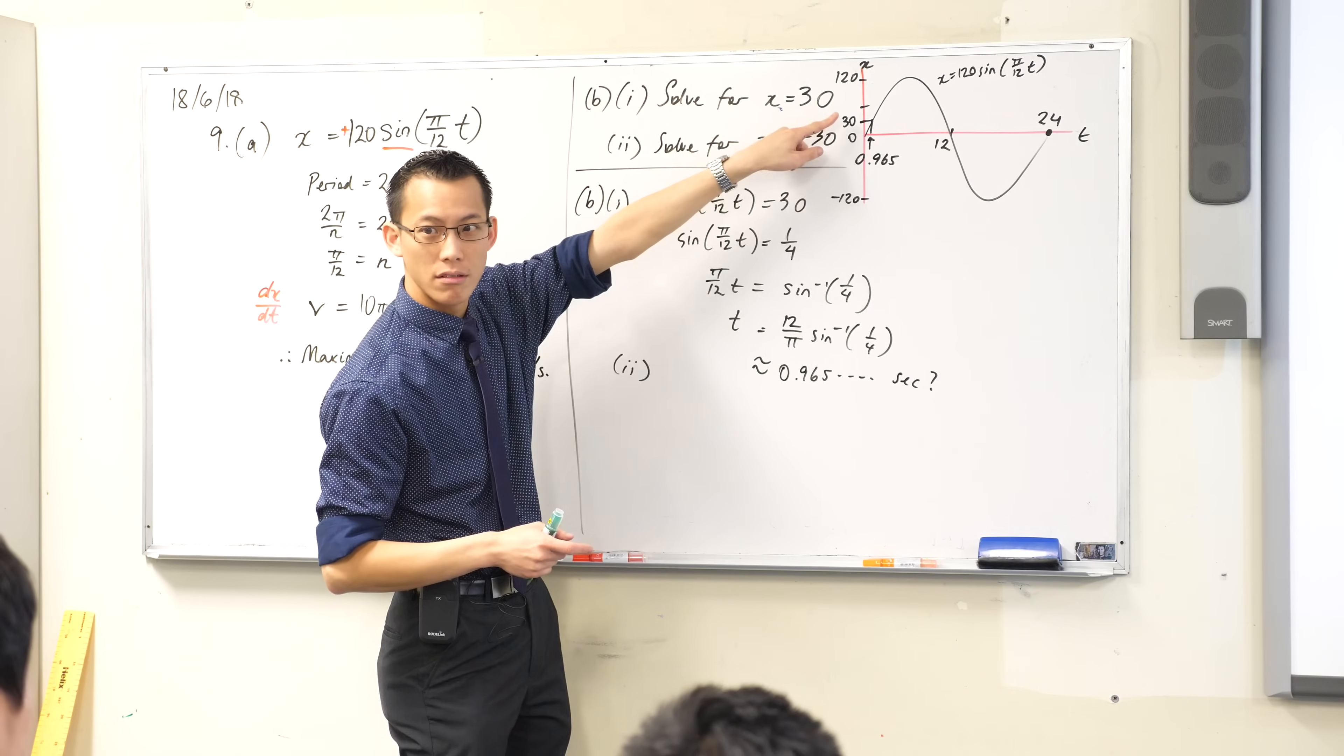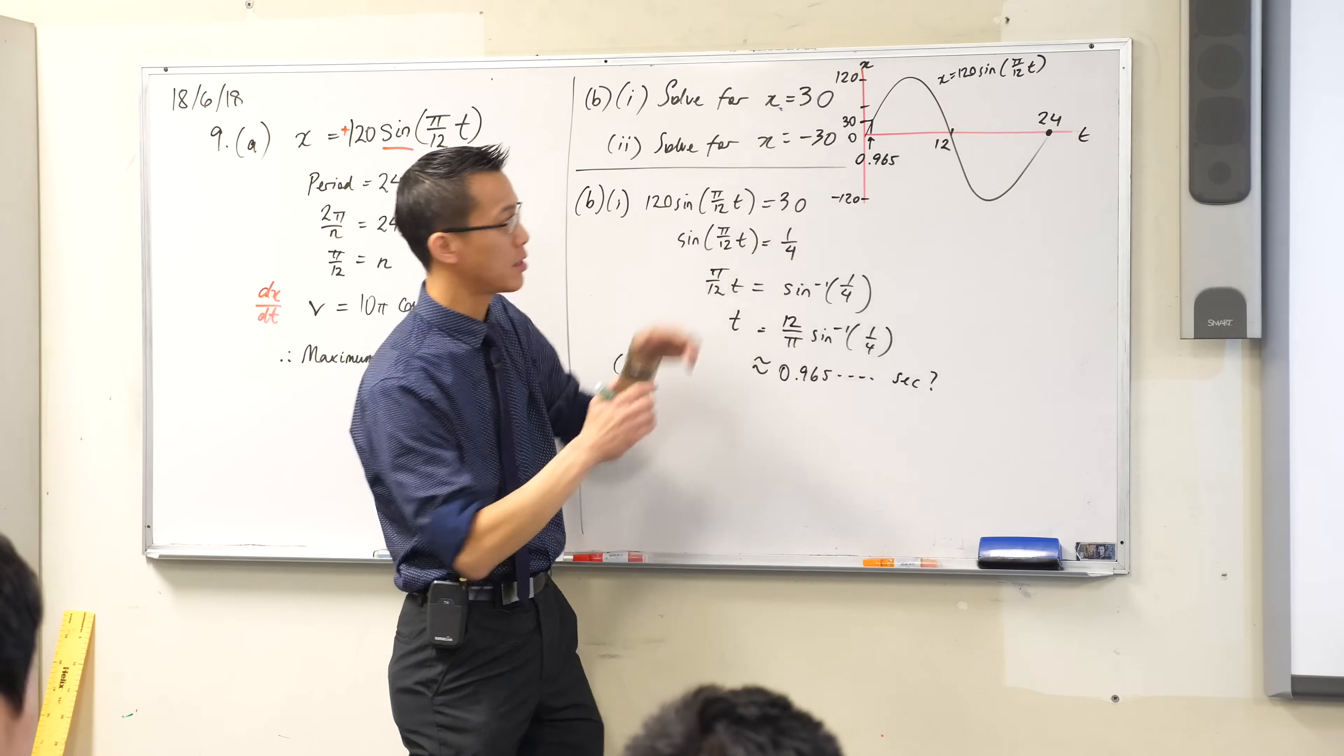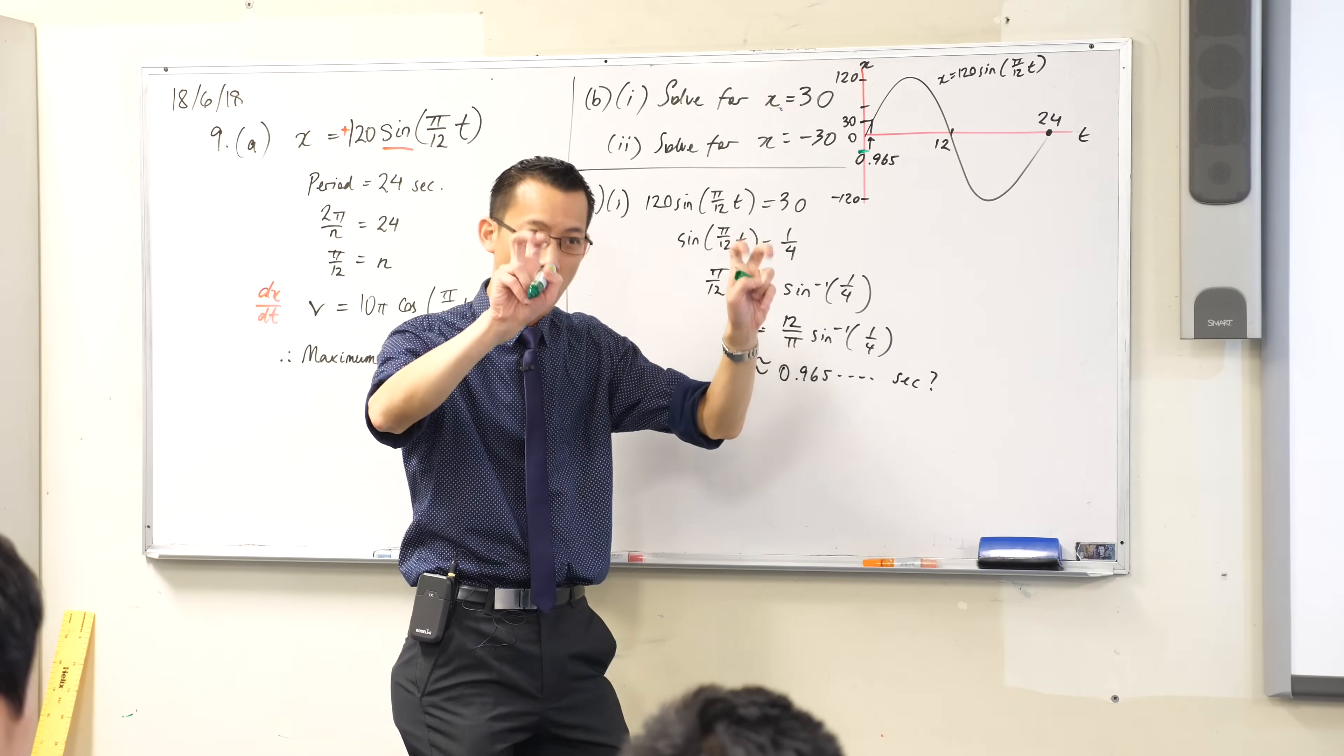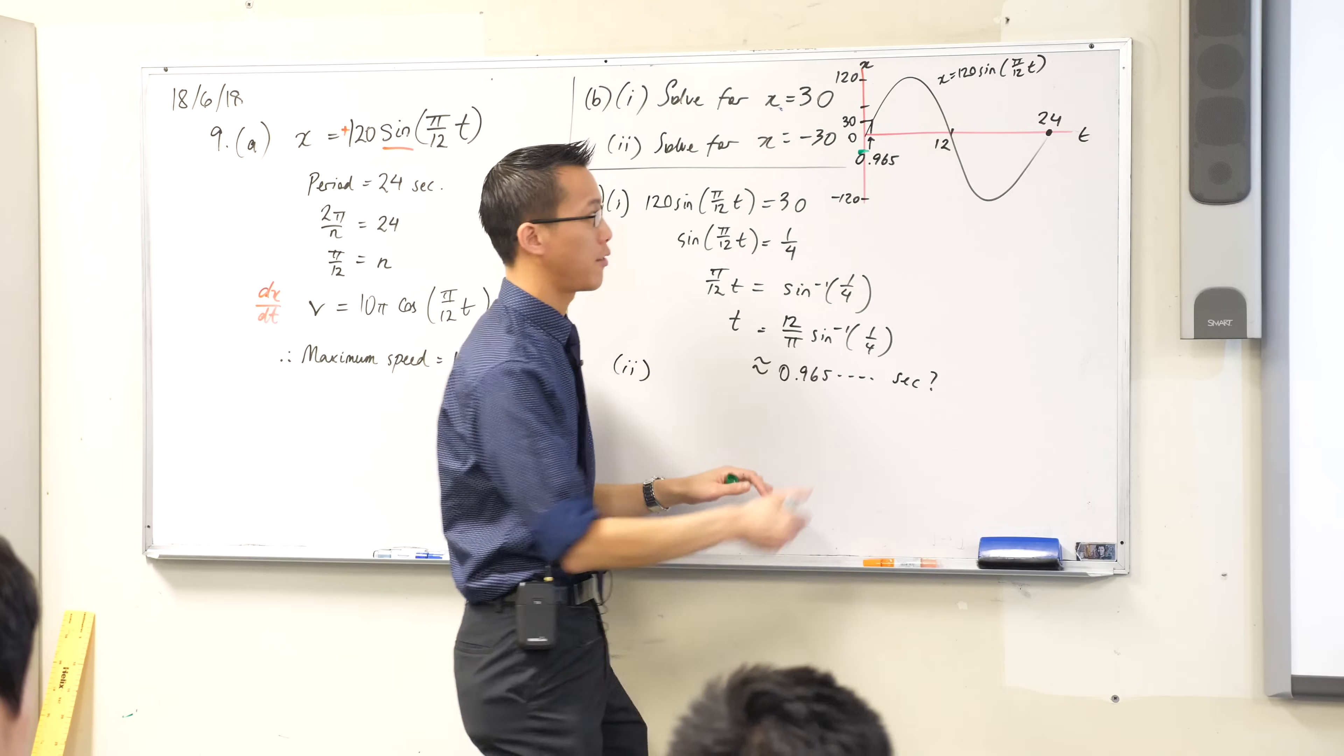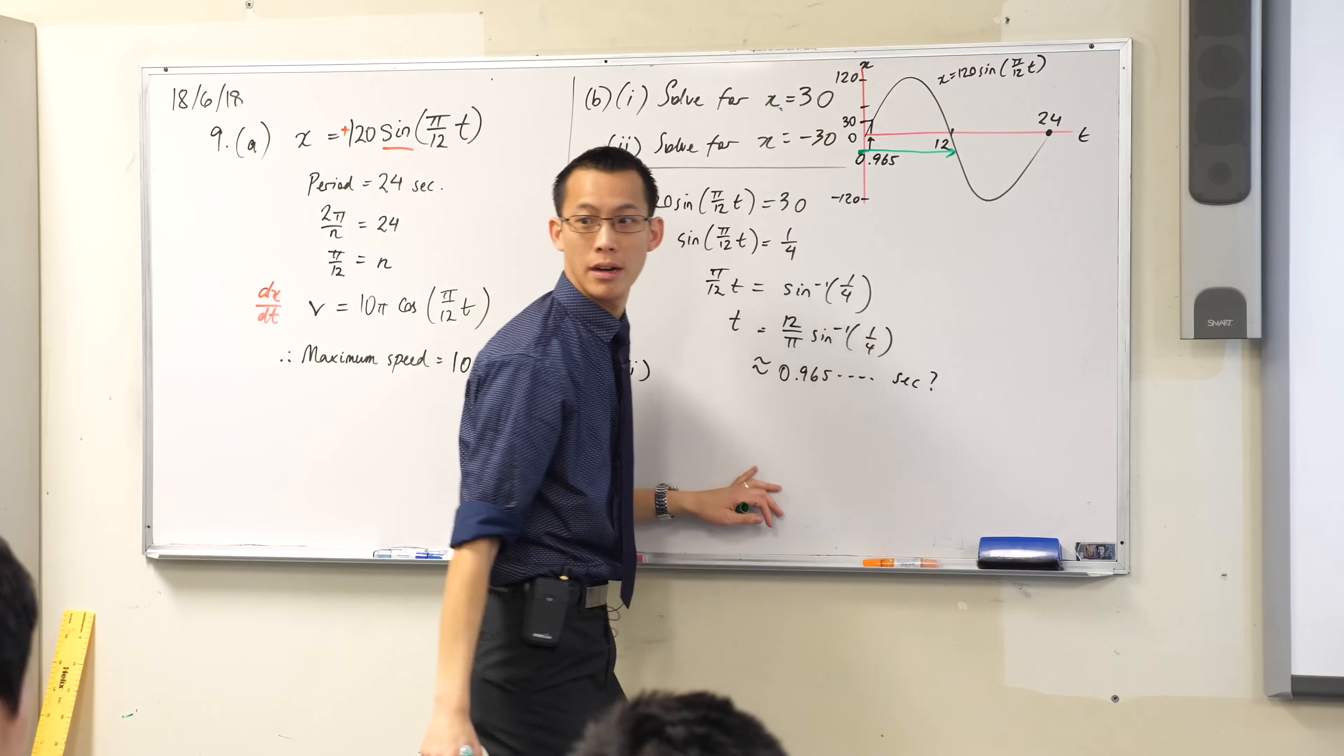Where's negative 30? It's gonna be just down below, on the opposite side. So if this is where negative 30 is, roughly, then the first time that the particle is going to be at negative 30 is all the way over here. Do you see that?